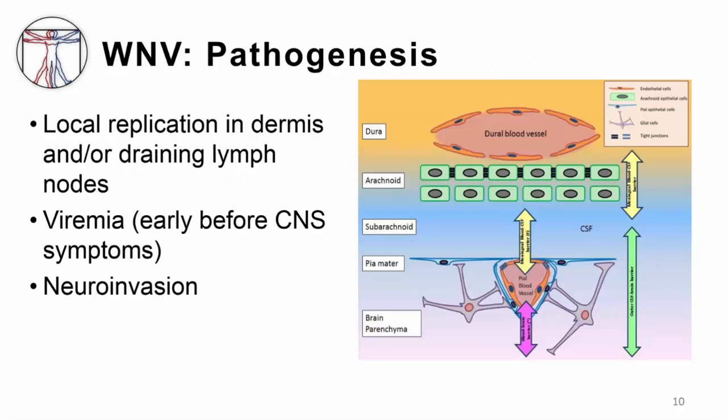Let's talk about how West Nile causes disease. There is local replication in the dermis at the site of viral inoculation as well as at the draining lymph nodes, both of which result in a sustained viremia that can cause the rash, fever, and myalgias. How the virus actually gets into the brain is an area of ongoing research. Theories include: disruption of the blood-brain barrier by inflammatory molecules; entry via infected lymphocytes or macrophages, like a Trojan horse; and retrograde infection of peripheral nerve cells with transport into the CNS, similar to enterovirus and polio.